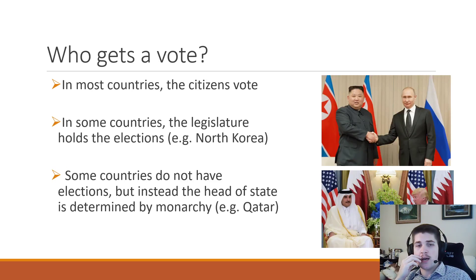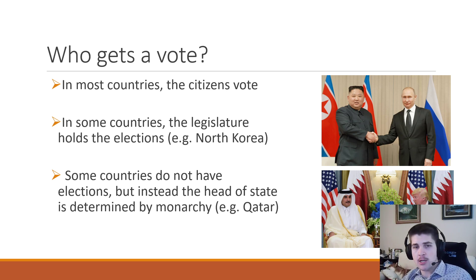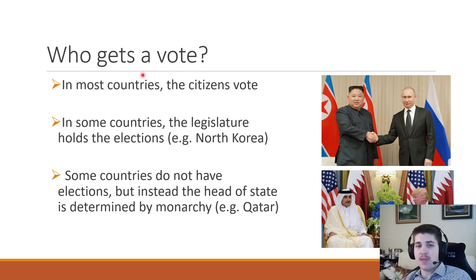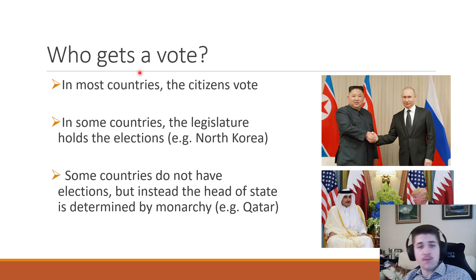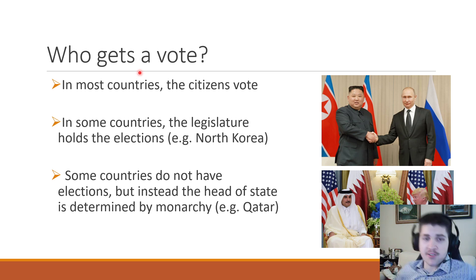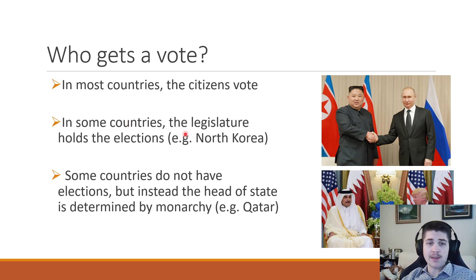Last thing before we get into the specifics: we also have to consider who actually gets a vote and whether there are equal levels of votes. In most countries, to preserve the ideal fairness criteria of the voting system, everyone gets a vote — every citizen. Sometimes people think it's unfair that non-citizen residents can't vote. It's a boundary line between who is actually a member of this country and who is not, and there's still a lot of debate about that idea today.